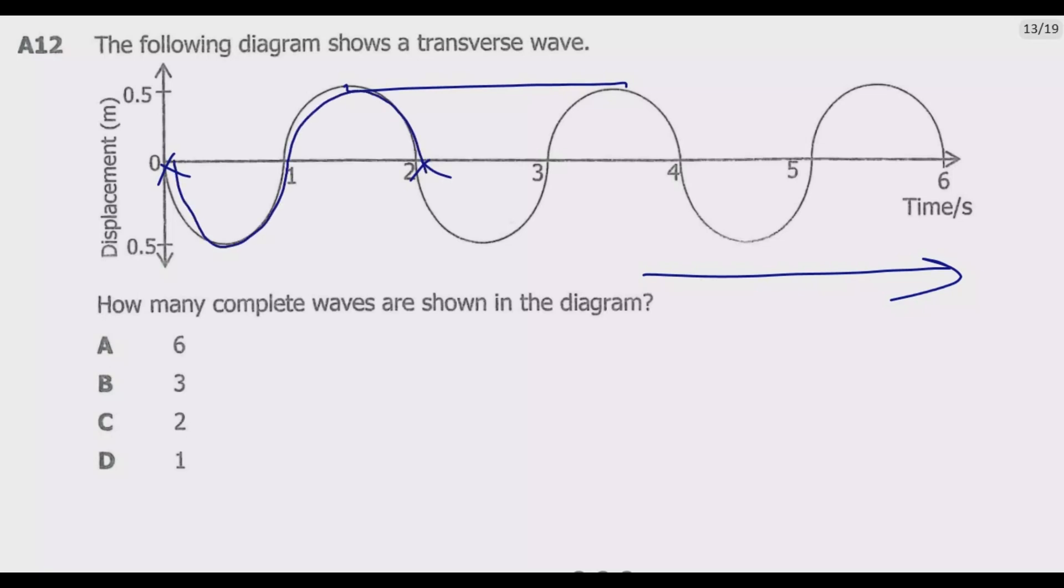You need to count half, like that. So we have a trough, then we have a crest, then we have the amplitude, like that. So we have one, then two, then three. So the correct answer here is B, which is three. Take note of the definition of the amplitude, the wavelength, the crest, and also the frequency.